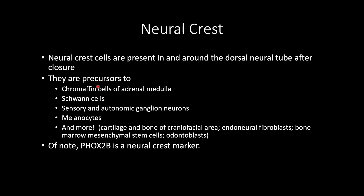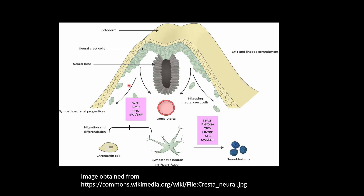Let's go back to our medical school days and talk about neural crest. Neural crest cells are present in and around the dorsal neural tube after closure. They are precursors to chromaffin cells of the adrenal medulla, Schwann cells, sensory and autonomic ganglion neurons, melanocytes, and more. FOXC2B is a neural crest marker, and here is a schematic showing the neural tube and the dorsal aspect.